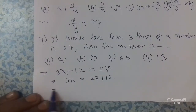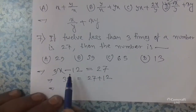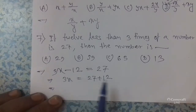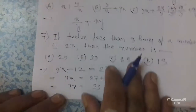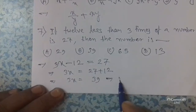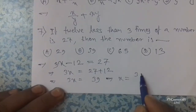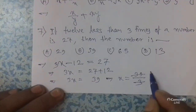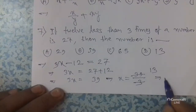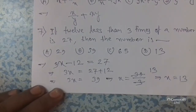So 3x = 27 plus 12 — because when we transfer minus 12 to the right hand side, it becomes plus 12. So 3x = 39. This implies x = 39 divided by 3. If we divide 39 by 3, it will be 13. Therefore x = 13, and the required number is 13.